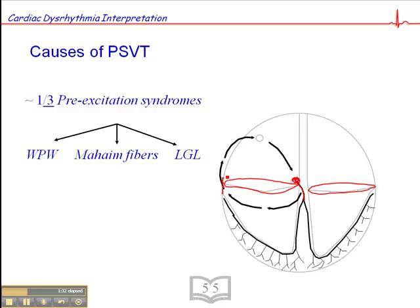But in the case of WPW, they have this accessory pathway, which typically travels along the epicardial surface. I've drawn it here on the right side of the heart, but it could be on the left, on the anterior surface — it could be anywhere.